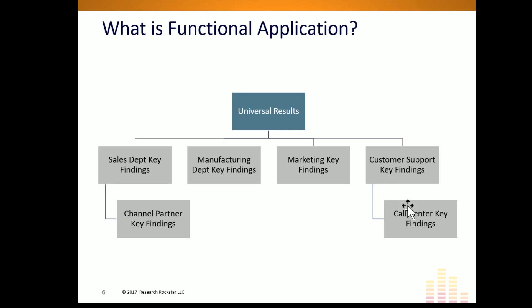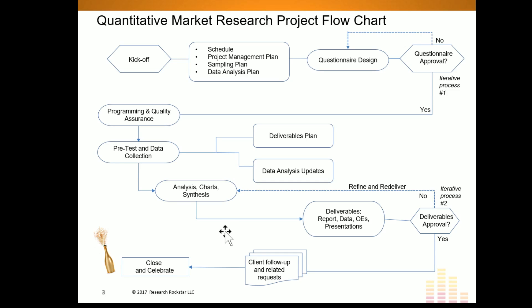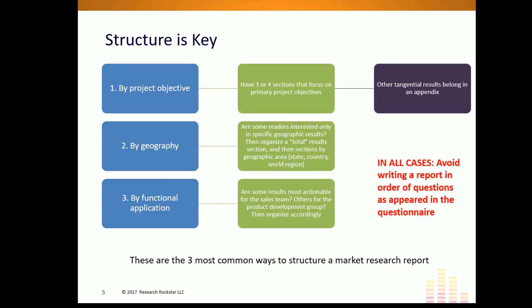If you find there's a lot of stress because the time allotted for report writing is never enough, having a really precise plan and outline is going to help a lot. The more precise your outline, the faster you're going to be able to write the report — and frankly, the better your report is going to be for your clients. So those are the three ways of organizing the core part of your survey research report: by project objective, by geography, or by functional area application.